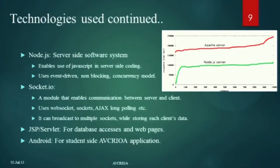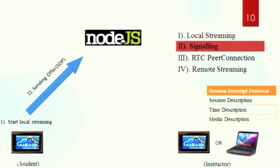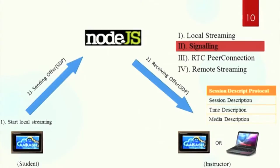We also used JSP and servlets, and Android for developing the APK for the student side. There are four steps in video streaming in our application. First is local streaming — the student has an Akash tablet and the instructor may use an Akash tablet or a desktop system. The student starts local streaming on his tablet, grants permissions, and the process begins. For the signaling process, the student sends an offer containing an SDP — Session Description Protocol — which contains session description, time description, and media description including supported media codecs.